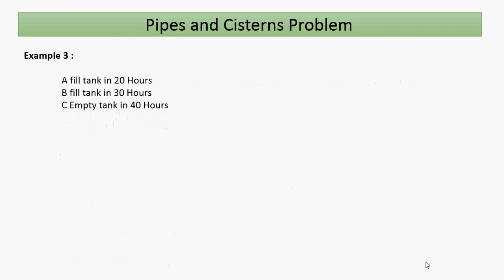Let's take another example: A can fill a tank in 20 hours, B can fill a tank in 30 hours, and C can empty the tank in 40 hours. How much time will it take for all three working together to fill the tank? A and B fill, while C empties.